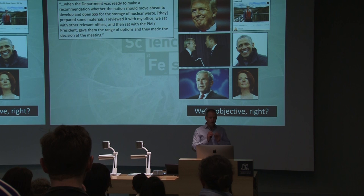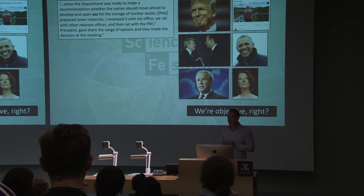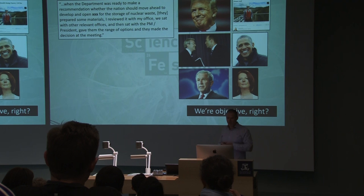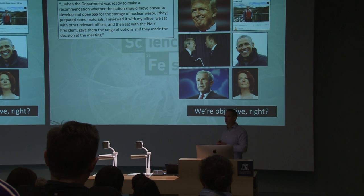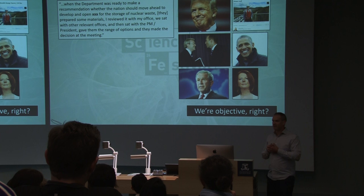This is a fun little game to warm our brains up. I want you to read the quote and tell me who you think the president or prime minister this quote refers to. I'm going to read these to you as well. The first one: 'When the department was ready to make a recommendation whether the nation should move ahead to develop and open a site for the storage of nuclear waste, they prepared some materials. I reviewed it with my office. We sat with other relevant offices, and then we sat with the prime minister or president, gave them the range of options, and they made the decision at the meeting.' Who does that refer to? Does anybody have an idea?